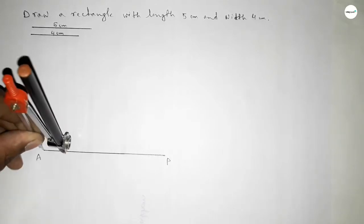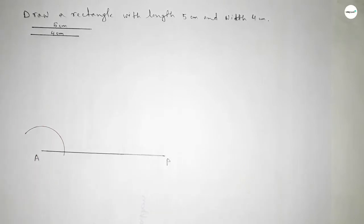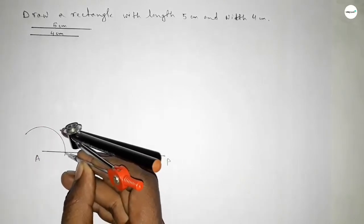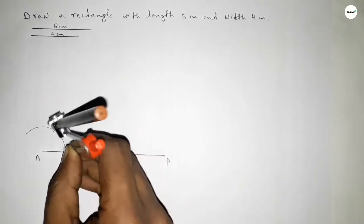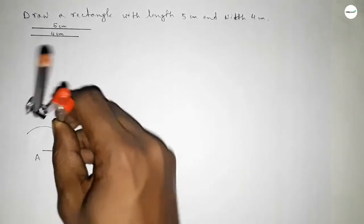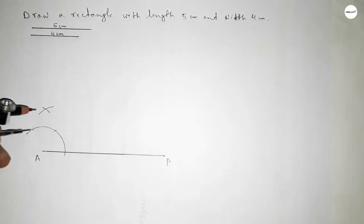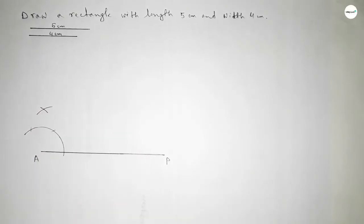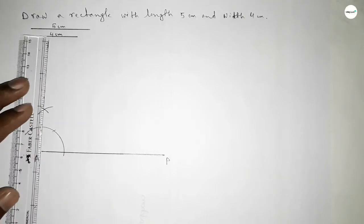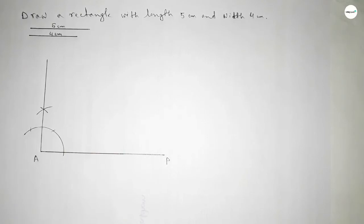Putting the compass on point A and taking any length, drawing an arc. With the same length, putting the compass on each intersection point and cutting arcs. Both curves intersect at a point. Now joining this side to get a 90 degree angle.